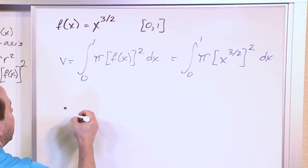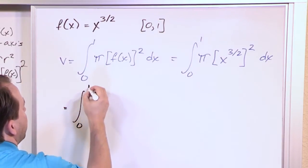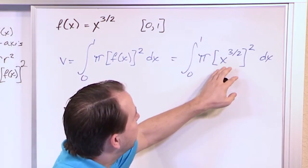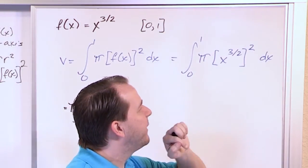So if I go and grab this guy and I'll say, all right, integral from zero to one, pi comes outside the integral, that's just a constant. What do I get here? x to the three halves raised to the power of two.